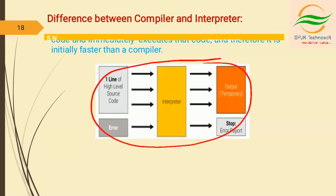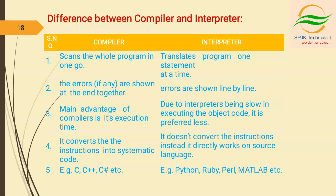Coming to the differences between compiler and interpreter. The compiler scans the whole program in one step, but the interpreter translates the program one statement at a time. The main advantage of compilers is execution time. Due to interpreters being slow in executing the object code, they are preferred less. In the compiler, errors are shown at the end together; but in the interpreter, errors are shown line by line. Examples of compiler languages are C, C++, C#, etc. Examples of interpreter languages are Python, Ruby, Perl, Matlab, etc.